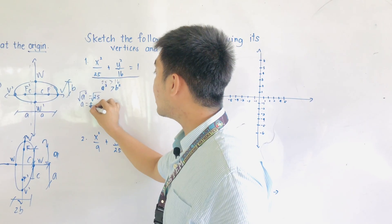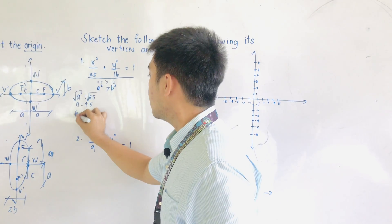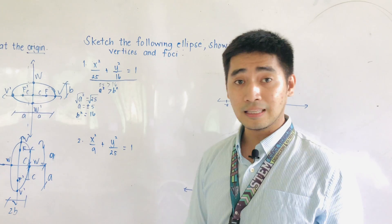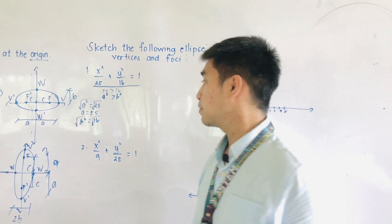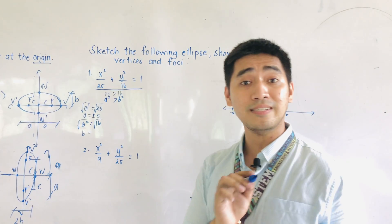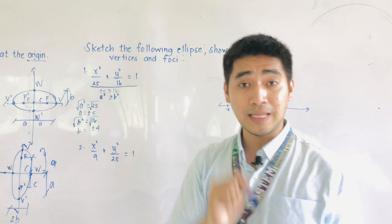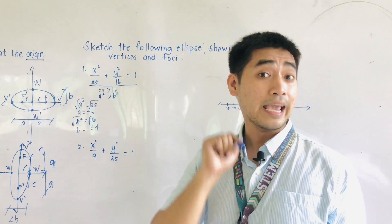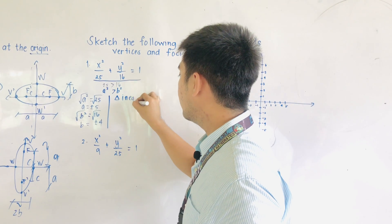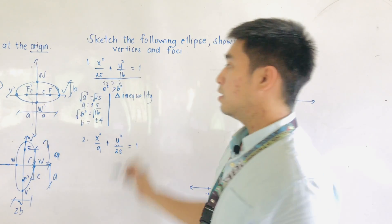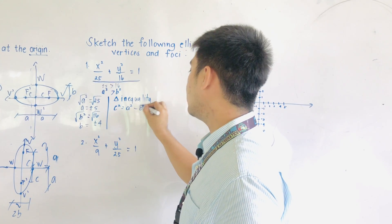The square root of A² is A, and the square root of 25 is ±5. B² = 16, so the square root gives B = ±4. Now, to find C, we use the triangle inequality formula: C² = A² − B². This formula gives us the coordinates of the foci.